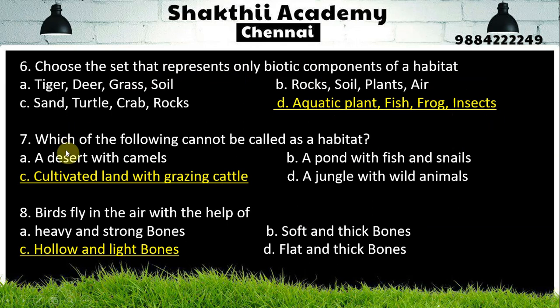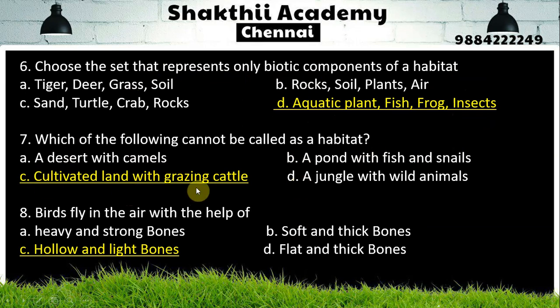Which of the following cannot be called a habitat? The answer is: cultivated land with grazing cattle — this is not considered a natural habitat.